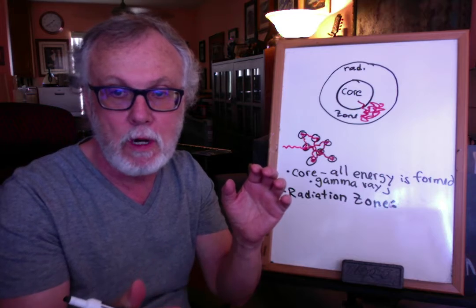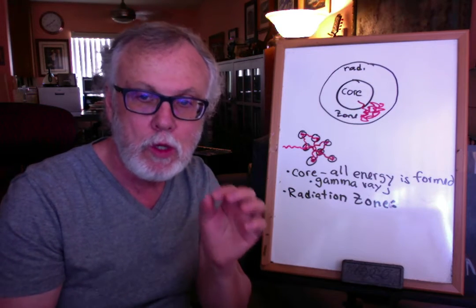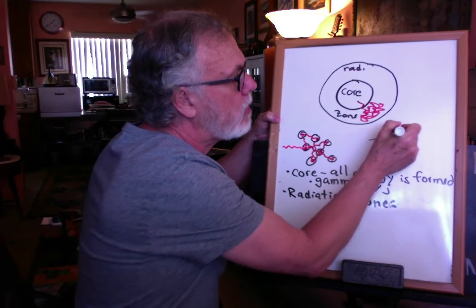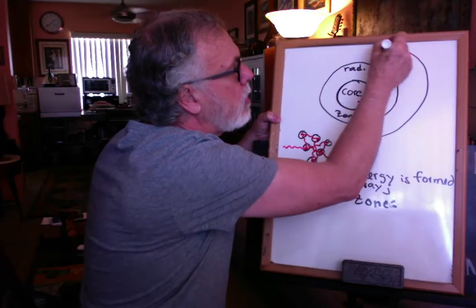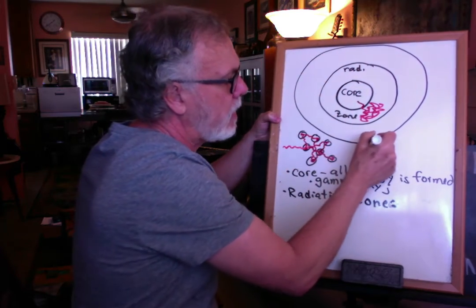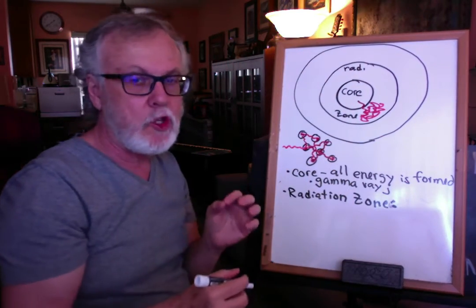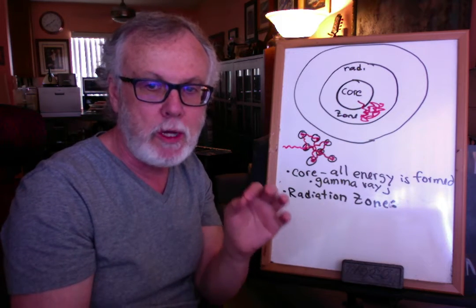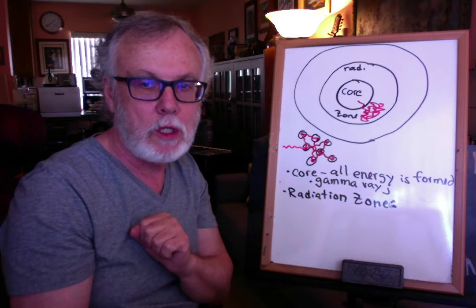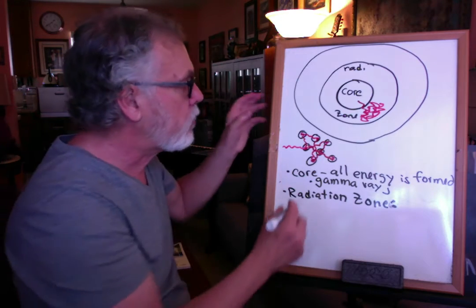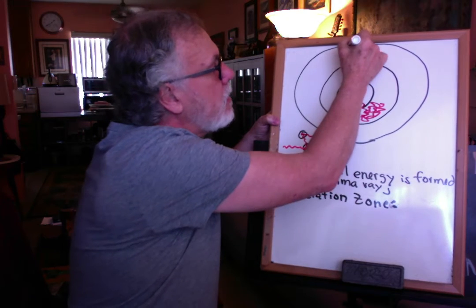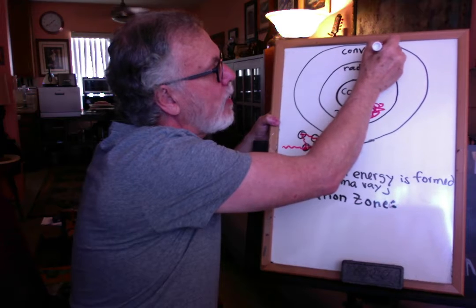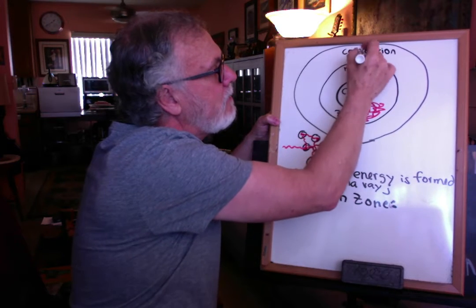As you move away from the core of a star, it gets cooler and cooler. We now pass into another region where energy transports in a process much different than radiation — it's not light. This region is actually called the convection zone.